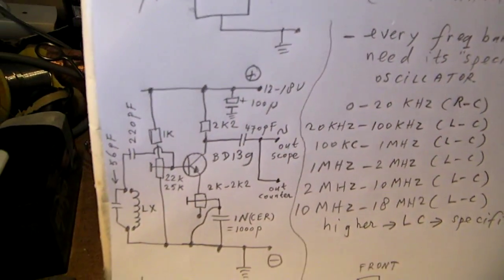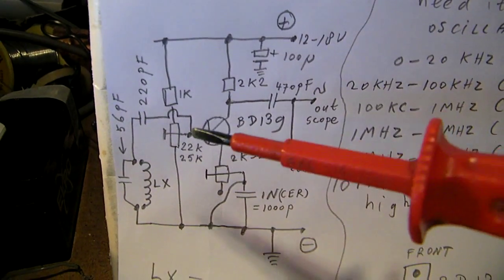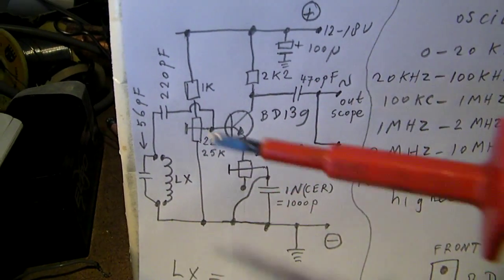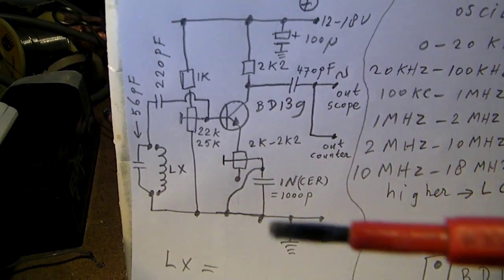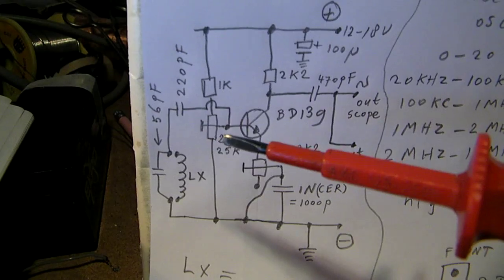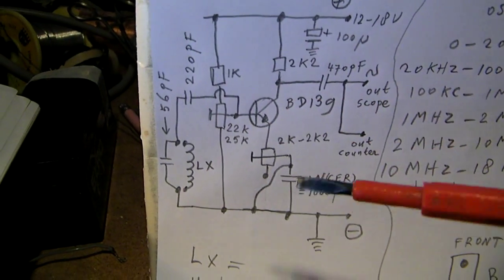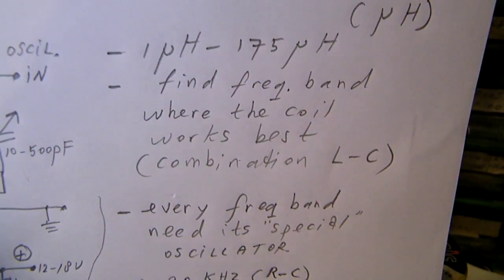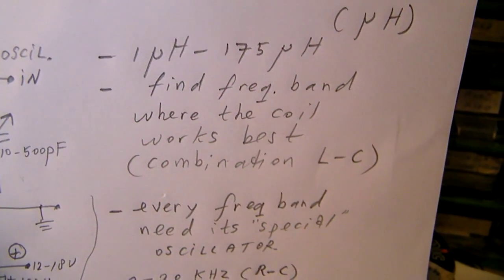And the good thing from this oscillator is by the way that there are two potentiometers. And you can get all kinds of coils into oscillation. With fixed value resistors here in the base and in the emitter, that's not possible. So find the frequency band where the coil works best.